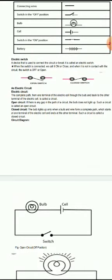is used to connect the circuit or break it. When the switch is connected, we call it on or closed, and when it is not in contact with the circuit, the switch is off or